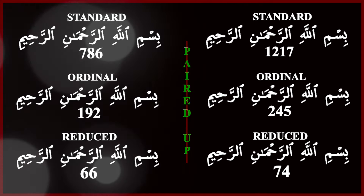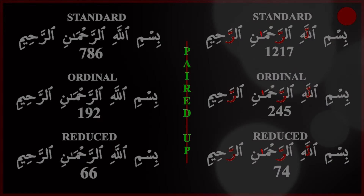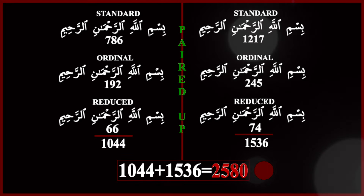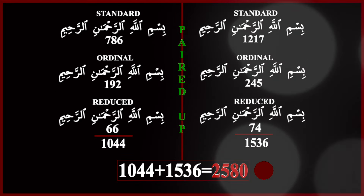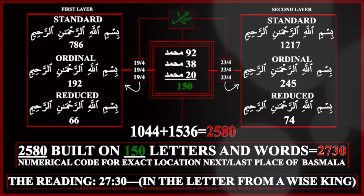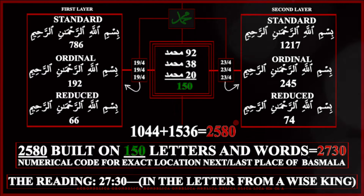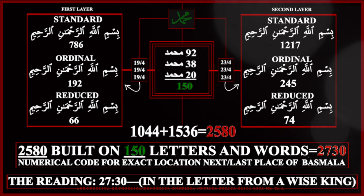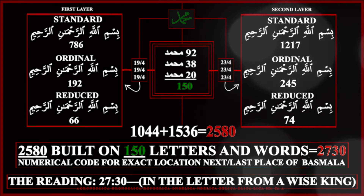For the first and second layer — the second layer being formed by adding the doublers and short Aleph — when we add these values, we get 2,580. 2,580 is built on 150 letters and words. 2,580 plus 150 is 2,730, which is the exact location of the second and last time the Bismillahirrahmanirrahim occurs in the text of the Quran, in chapter 27, verse 30.